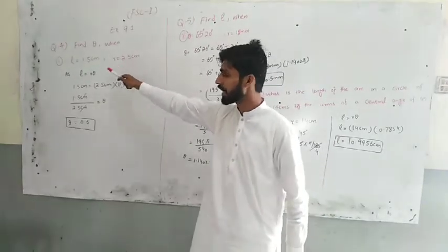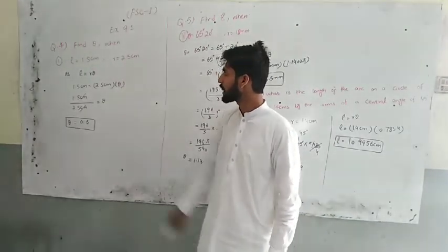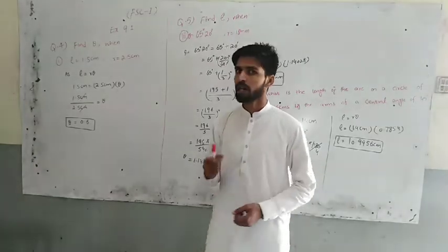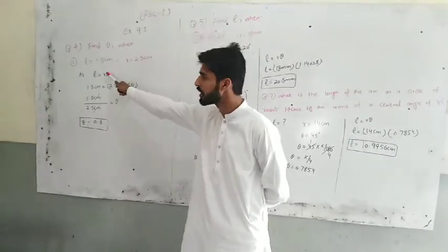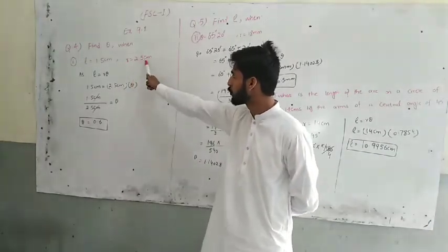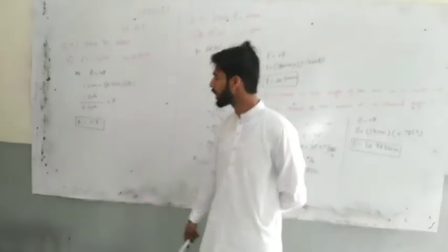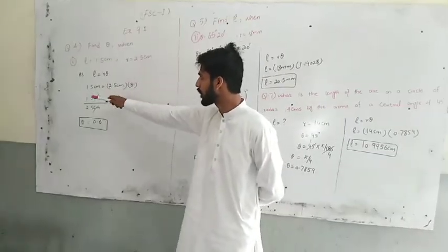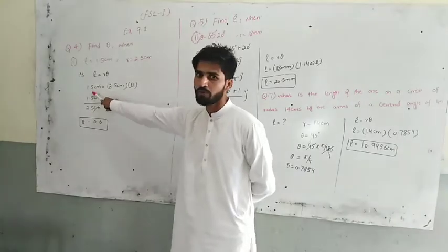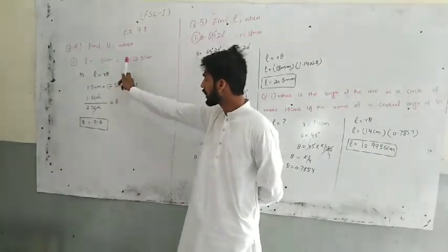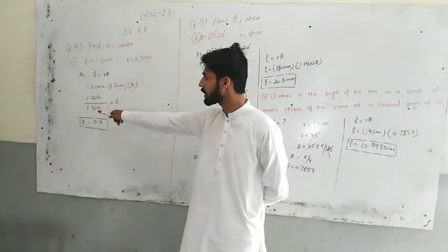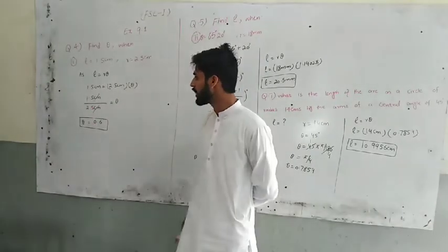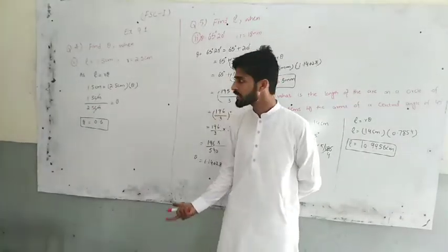Find theta when l equals 1.5 cm, r equals 2.5 cm. We have to find the theta angle. Length of arc is 1.5 cm, and radius is 2.5 cm. If you know that l equals r theta, then l equals 1.5 cm, r equals 2.5 cm, and theta we have to find. If 2.5 is divided, then theta is 0.6 radians.